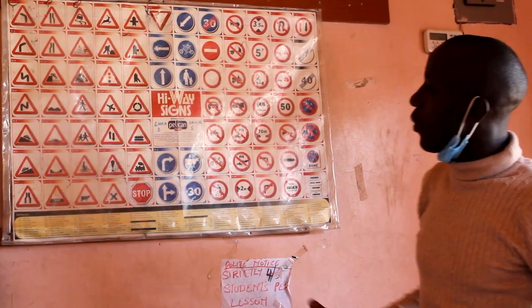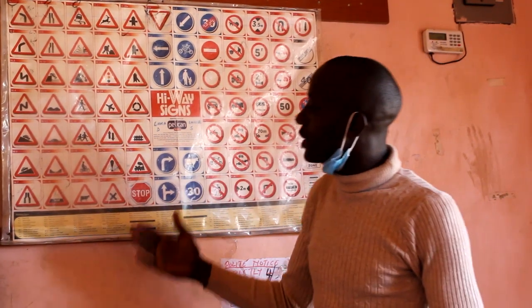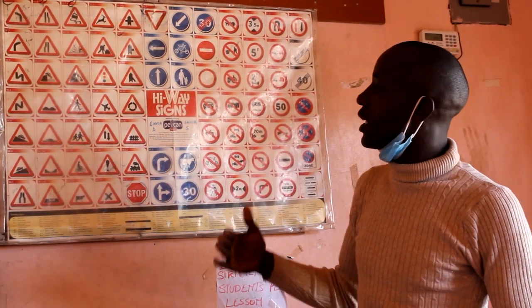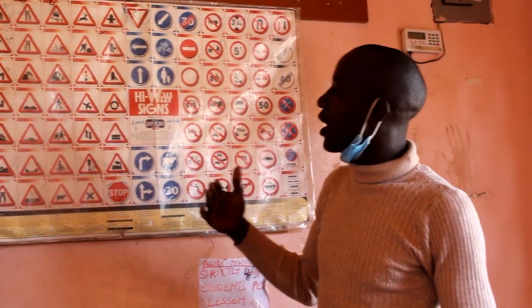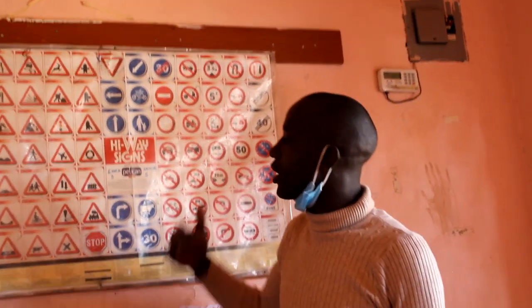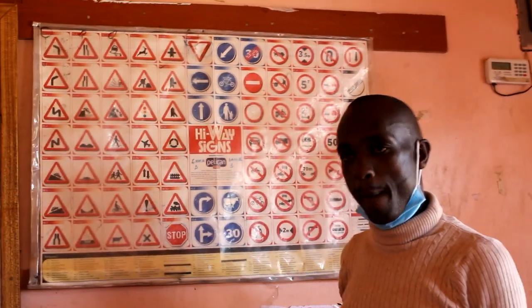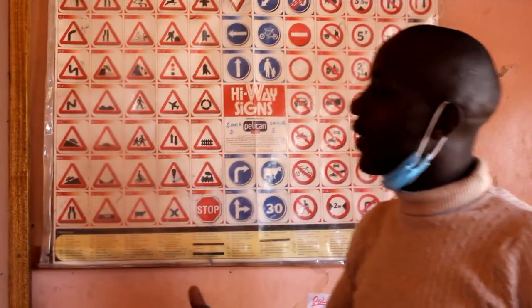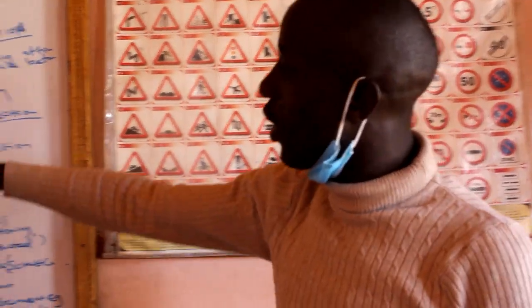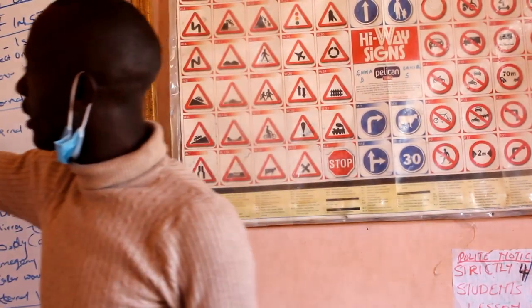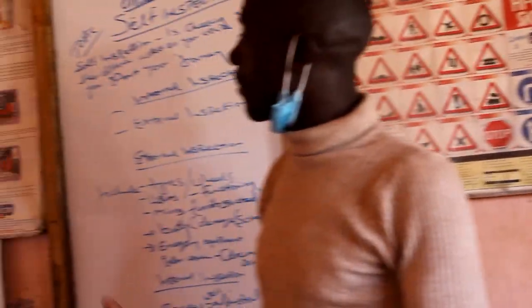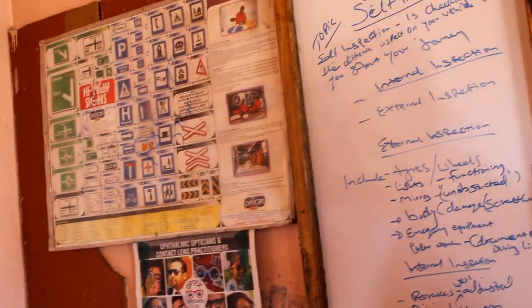In Class B we have signs which give us orders. And we have Class C, which are informatory signs — those signs inform us and give us facility.